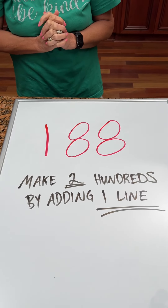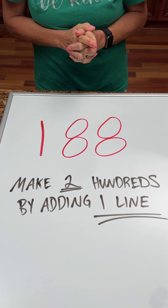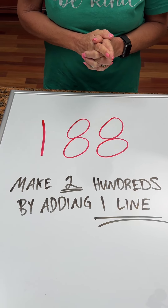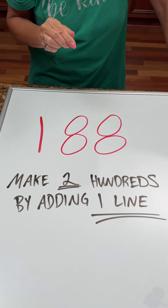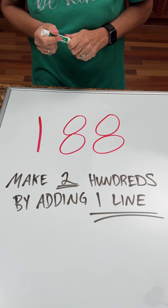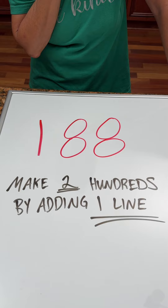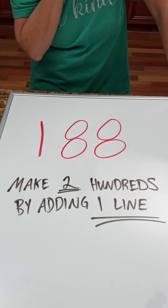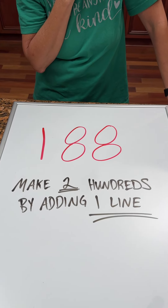All right, Cam, make two hundreds by adding one line. Two hundreds. Like 288 — we got 188 there, but we need to make two hundreds by adding one line.